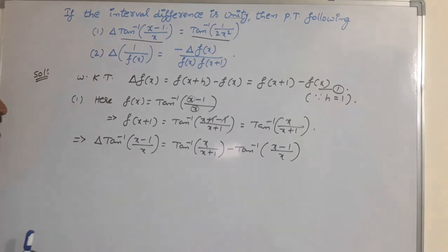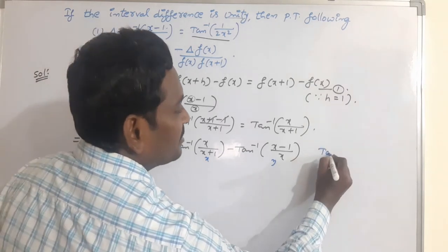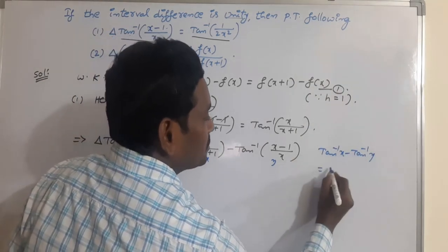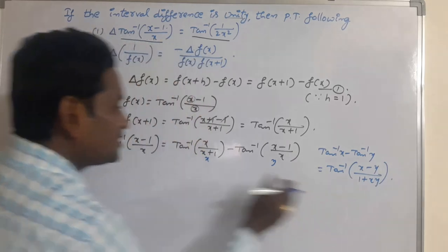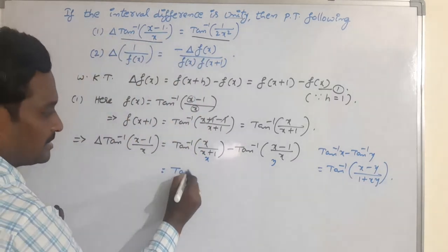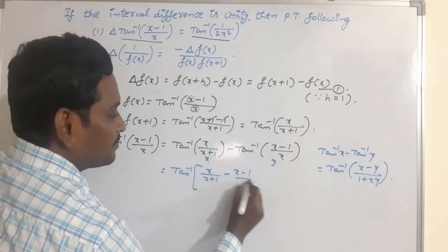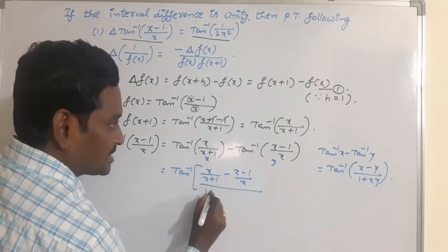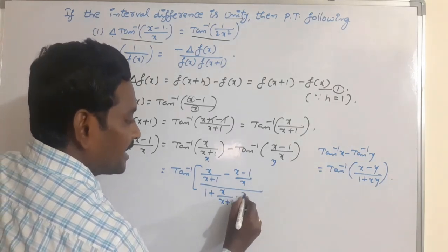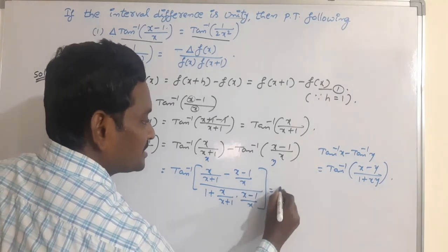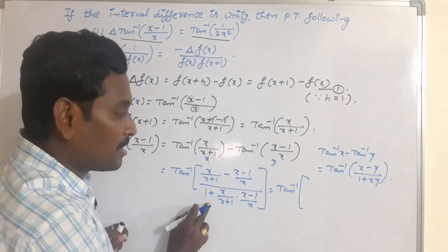We observe this is in the form of tan inverse x minus tan inverse y. The formula is tan inverse of (x minus y) divided by (1 plus xy). Applying this formula, we get tan inverse of [x/(x+1) minus (x-1)/x] divided by [1 plus x/(x+1) times (x-1)/x]. Now take the LCM in the numerator as well as in the denominator.